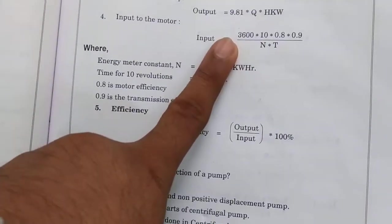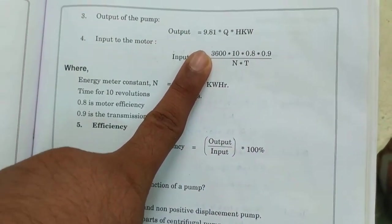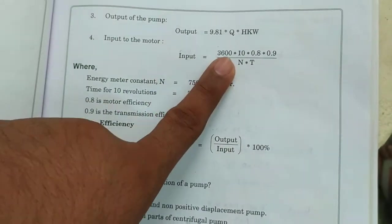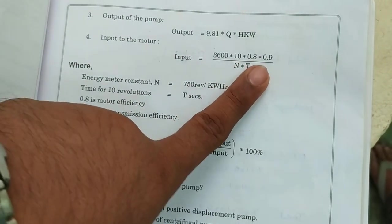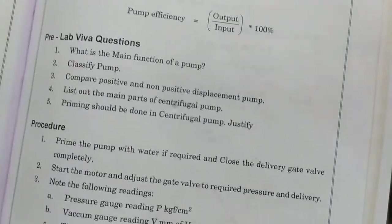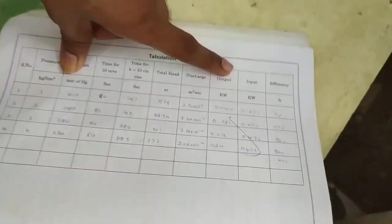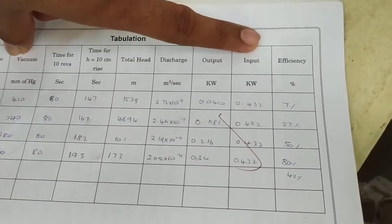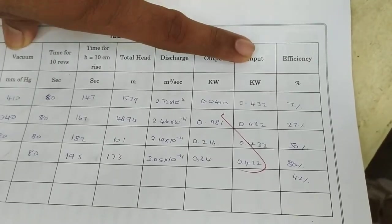And your output is 9.81 into discharge into head. Your input is 3600 into 10 into 0.8 into 0.9 divided by 10 into t. And so that is how your output and input is being calculated, and efficiency is the ratio between output and input.